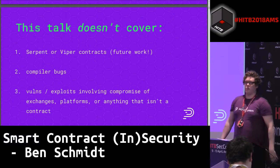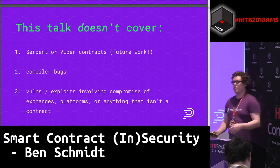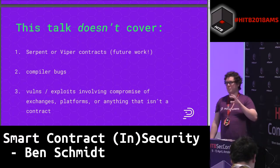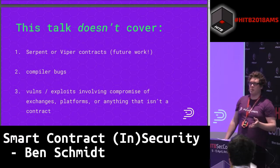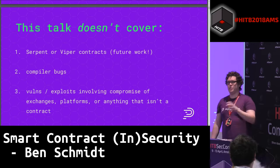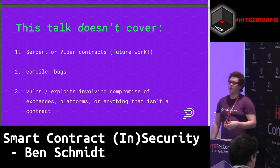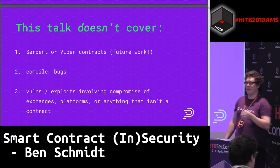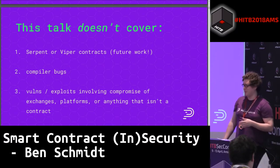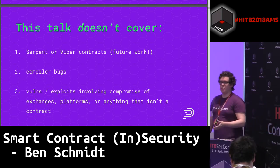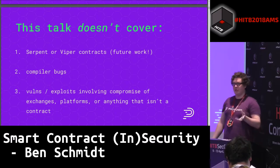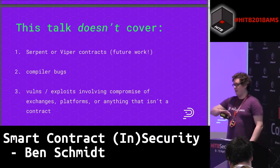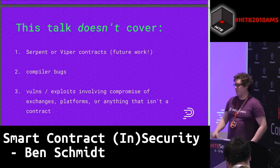What we're not covering today are vulnerabilities in contracts written in other languages. Serpent is an older language that's sort of Python-ish and is no longer really used - there have been some interesting vulnerabilities in that, but we're not going to talk about those today. Viper is a new language being developed right now that will allow for the application of formal methods to Ethereum smart contracts. That language is still in development and there's not really anything deployed that uses it. We're also not going to be covering compiler bugs - there have been a few in Sol-C, the main compiler used to generate EVM code from these contracts.